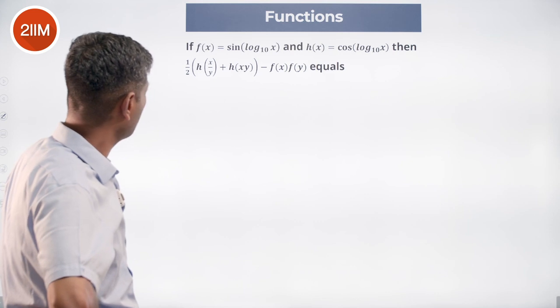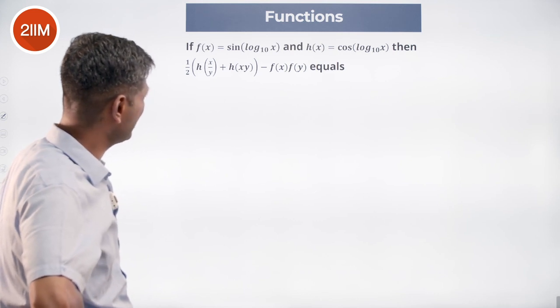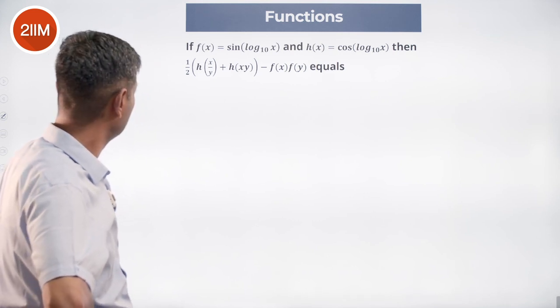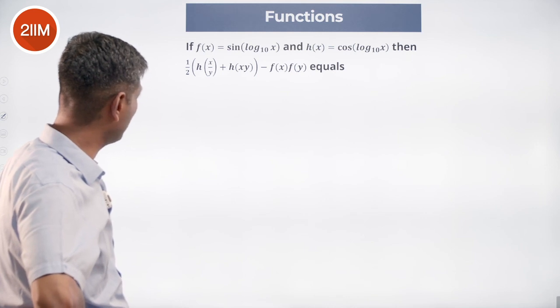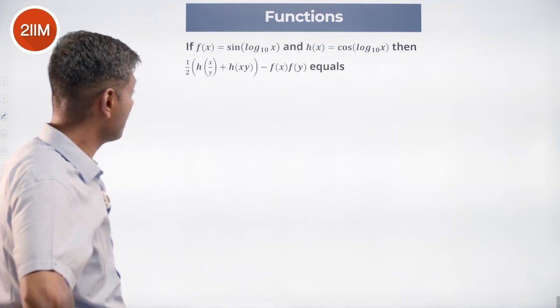f(x) is sin(log x) and h(x) is cos(log x), then (1/2)[h(x/y) + h(xy)] - f(x)f(y) equals...